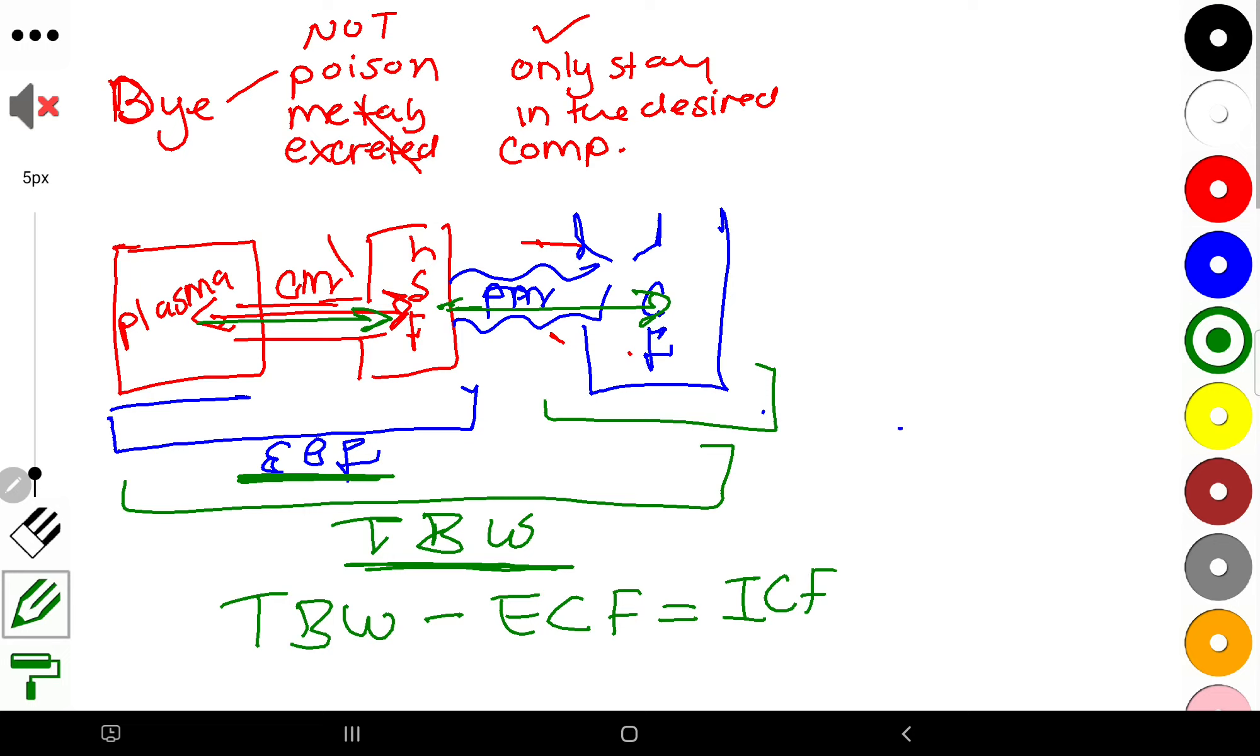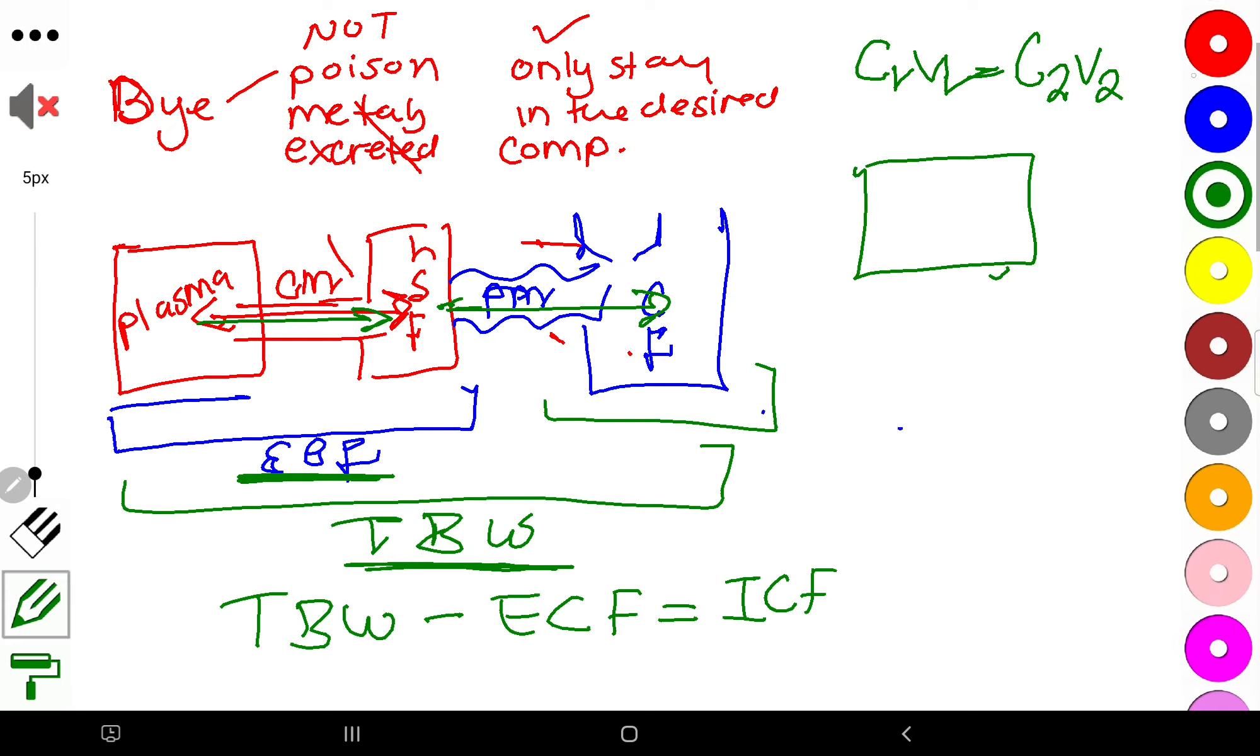So how do we do this exactly? What we do is we use C1V1 is equal to C2V2. So the principle is that if you have a container and you put in a dye with a known concentration and known volume, so you have your C1 and you have your V1, after it mixes, you will take out a portion and estimate the concentration, which is C2. So with that, you will be able to use V2 equal to C1V1 over C2 to calculate your volume.